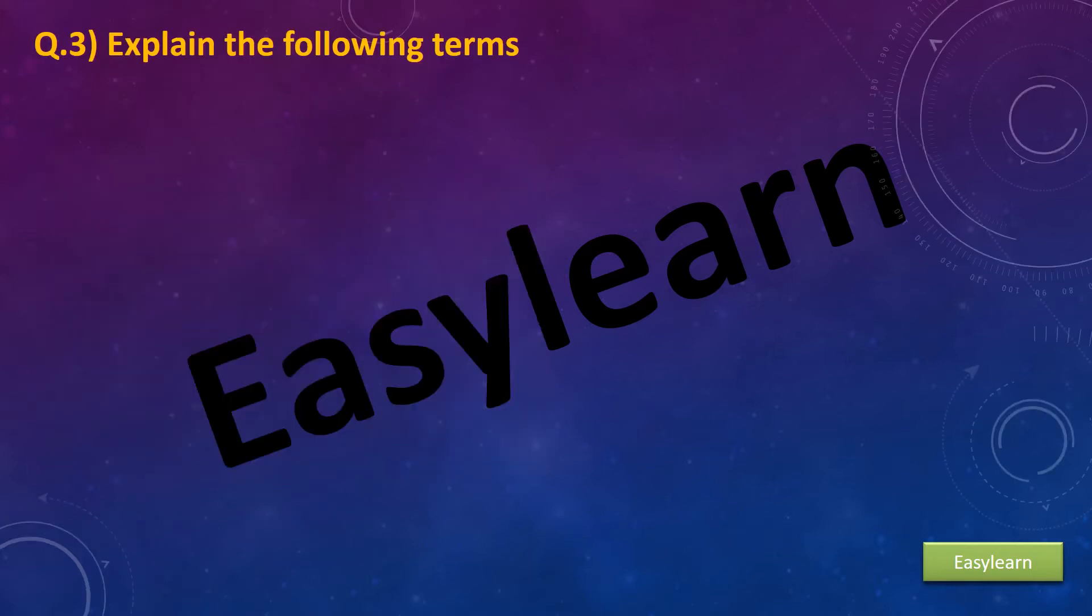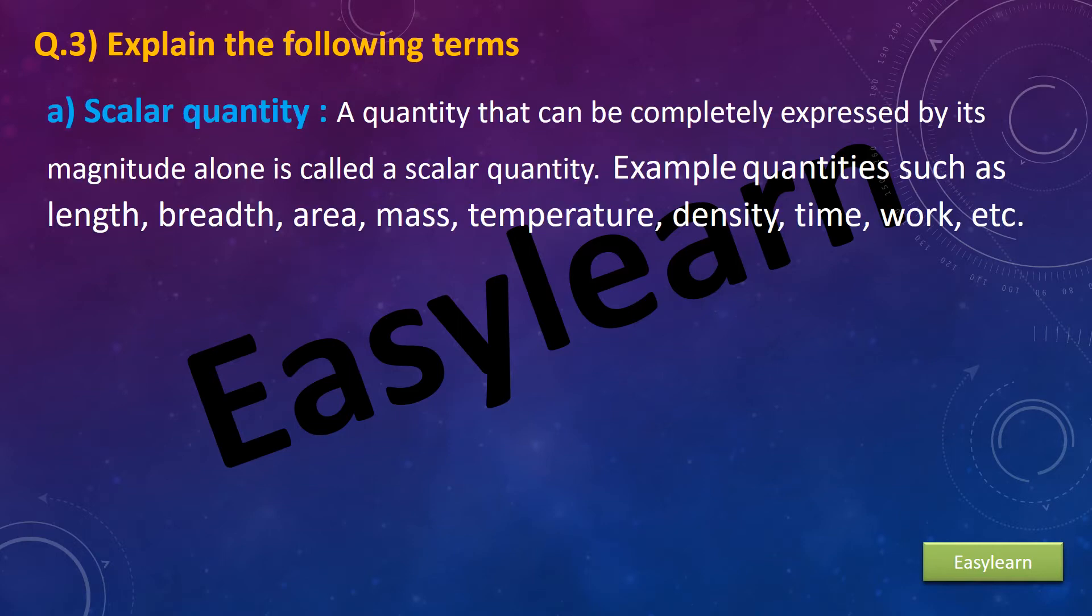Question 3: Explain the following terms. A) Scalar quantity. A quantity that can be completely expressed by its magnitude alone is called a scalar quantity. Example quantities such as length, breadth, area, mass, temperature, density, time, work, etc.